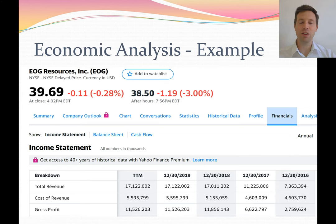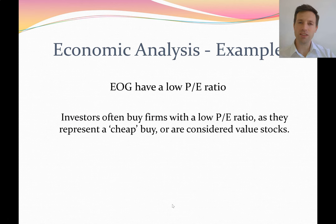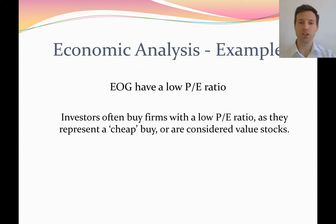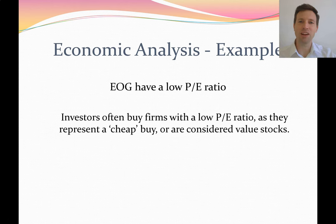They're growing rapidly, their financial statements are looking good — revenues up, profits are up. However, if we look at the current share price, EOG have a low price to earnings ratio, or PE ratio. This is often used by investors who try to buy companies with a low PE ratio as they represent a cheap buy and are considered to be value stocks. So EOG are growing their revenues and profits really rapidly, but currently they have a low price to earnings ratio. We need to think about what's causing this.